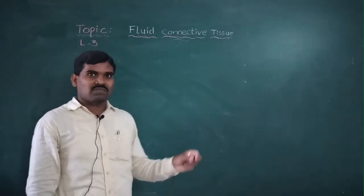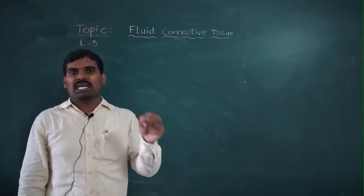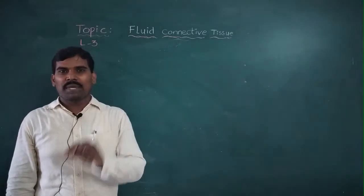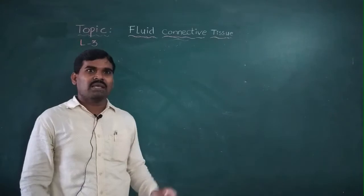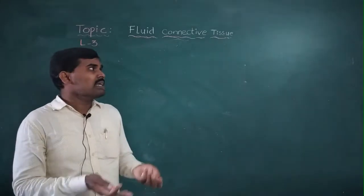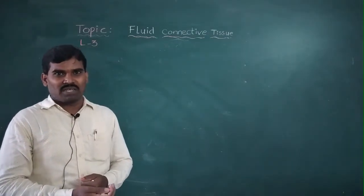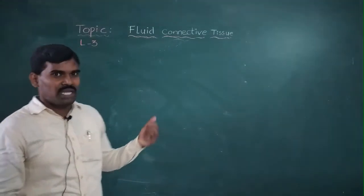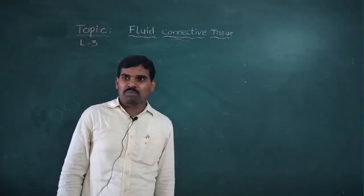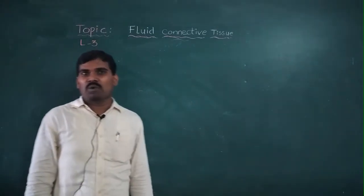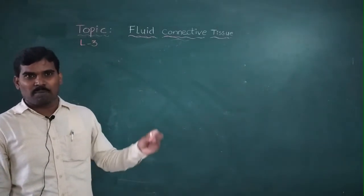Lymphocytes are of 2 types: T lymphocytes and B lymphocytes. Both types of lymphocytes completely increase the immunity power. The total percentage of lymphocytes is 30%.